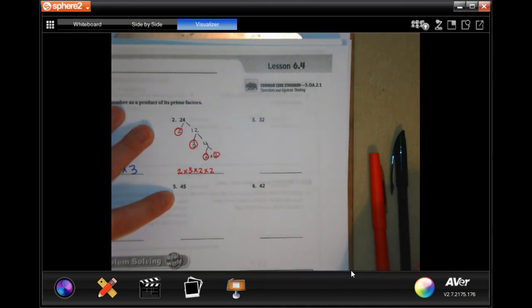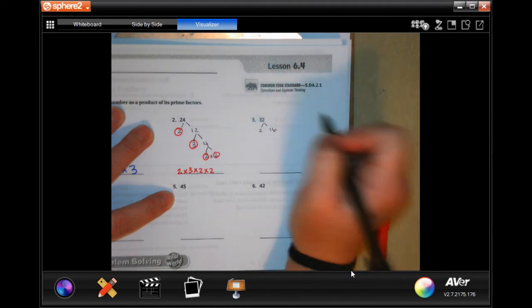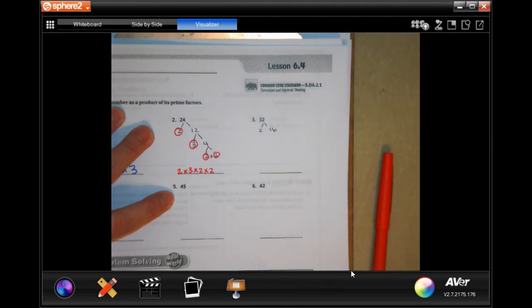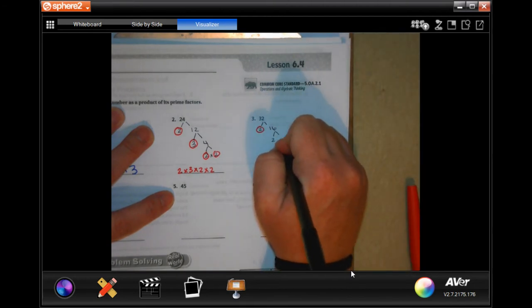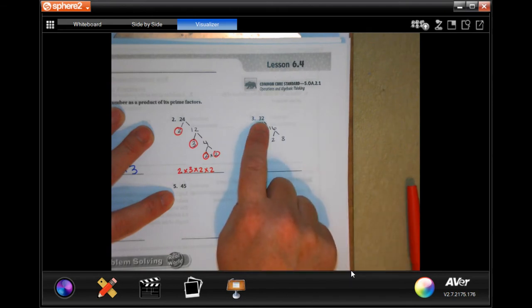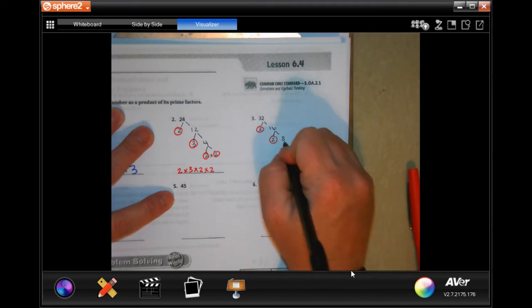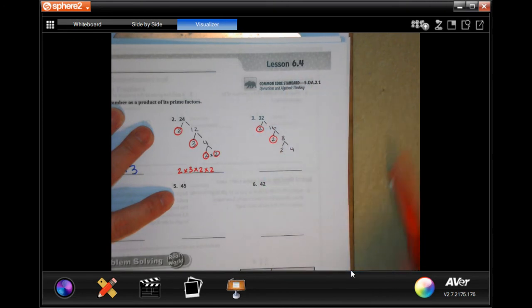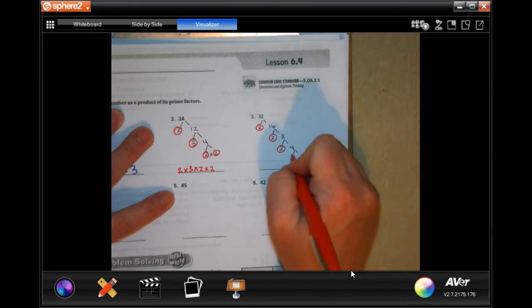We do 32. I'm going to do two times 16. You can do four times eight. You can do however it is you want to get to 32, as long as it equals 32. Two is prime. 16, two times eight. I tend to like using two if it's an even number. I tend to like using two because it gives me a prime number faster. If I did four times eight, then I would have to break up four over here too. Eight, two and four. And four is two and two. Both prime.